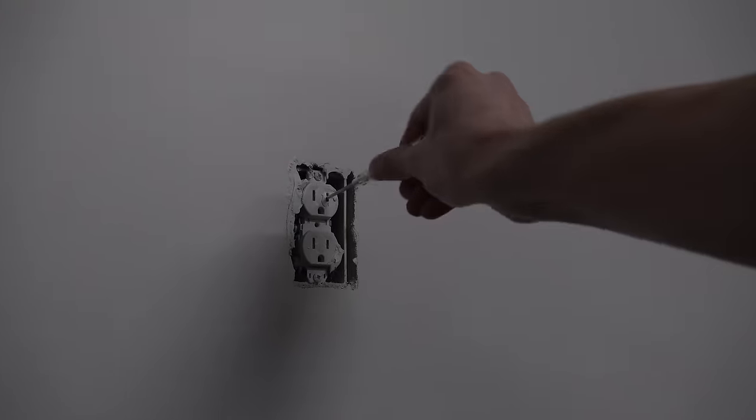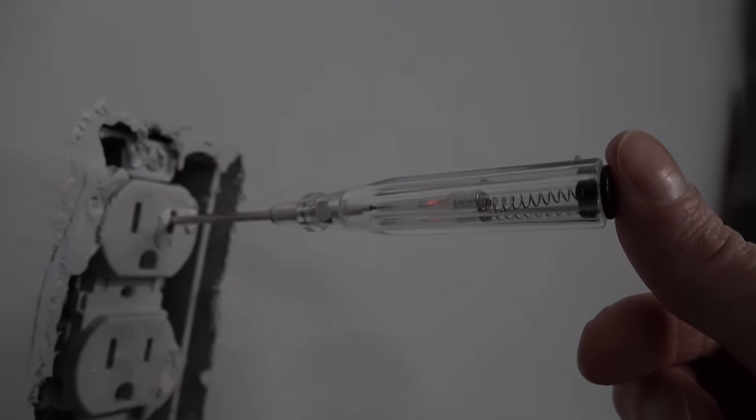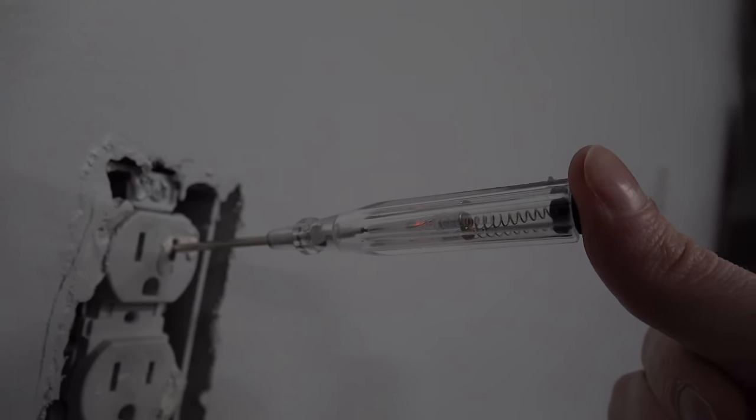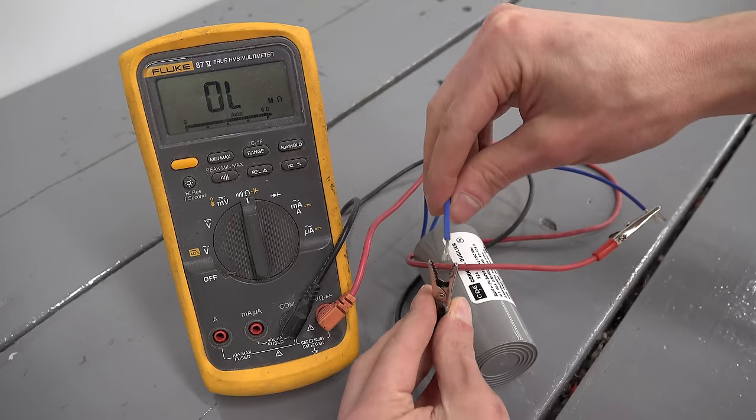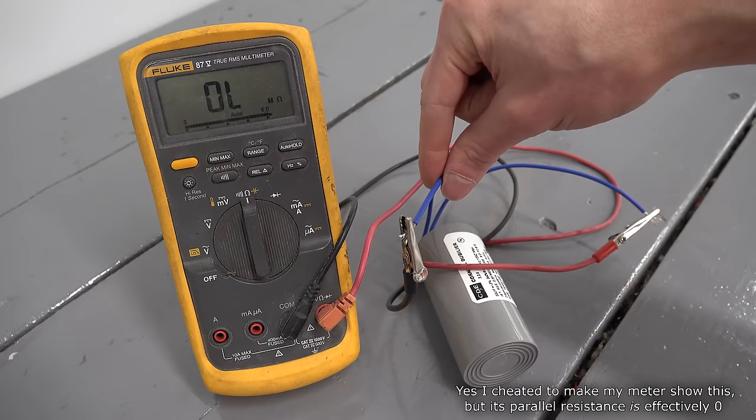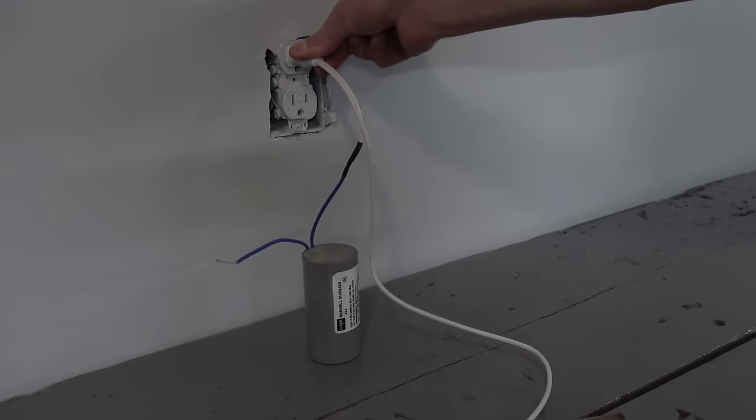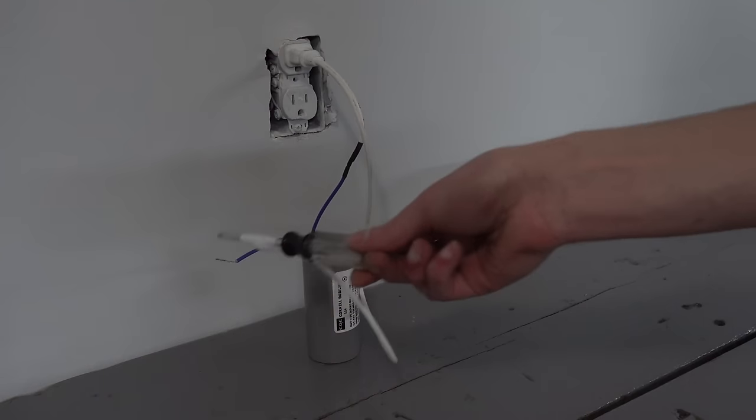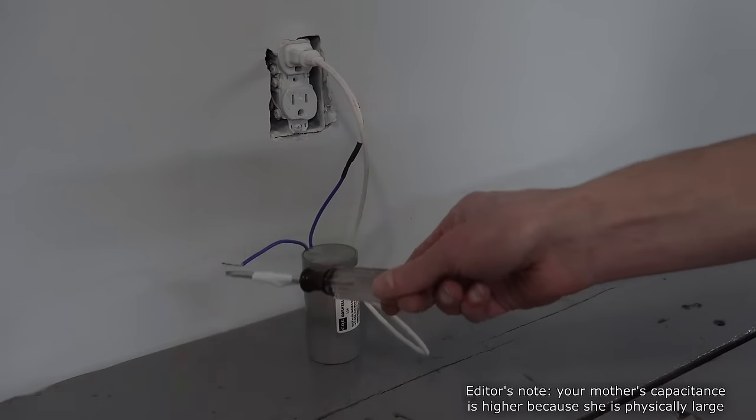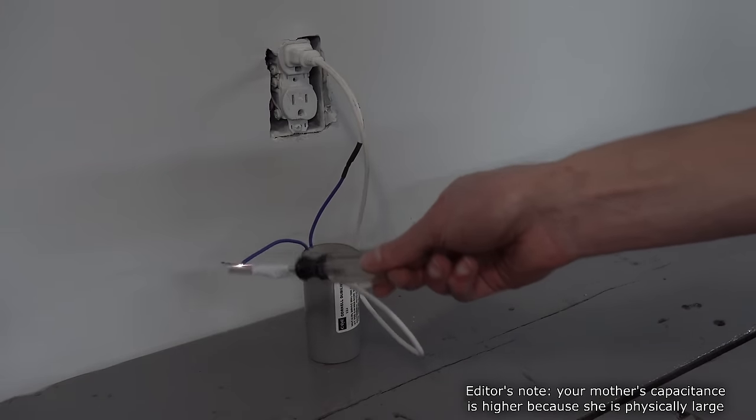There's another issue relying on resistance when you're dealing with AC. If you've ever been shocked by a live wire without touching ground at the same time, you've experienced this. What's completing this circuit here? A capacitor, of course. Notice how the resistance of this capacitor is so high that it can't be measured by my meter. Yet it still can pass a bunch of current. That's because AC can pass through a capacitor. You have a capacitance too, which is why you can feel a shock from touching a single live wire.